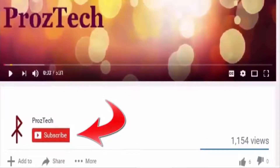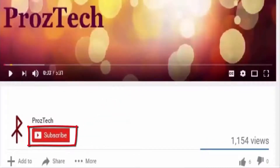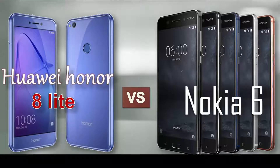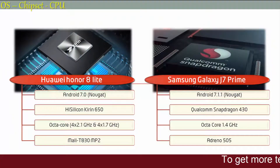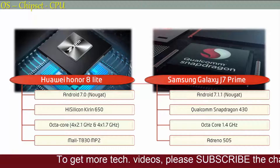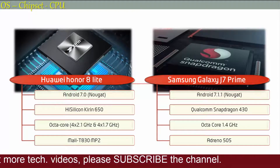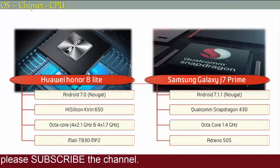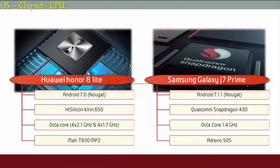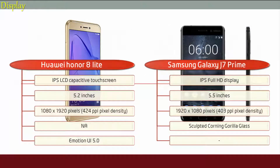You are watching Prostek. So let's get started. Starting with the Huawei Honor 8 Lite, it works on Android 7.0 Nougat and is powered by an octa-core HiSilicon Kirin 650 processor with Mali T830 MP2. Whereas the Nokia 6 works on Android 7.1.1 Nougat and is powered by a Qualcomm Snapdragon 430 processor with octa-core 1.4 GHz and GPU Adreno 505.